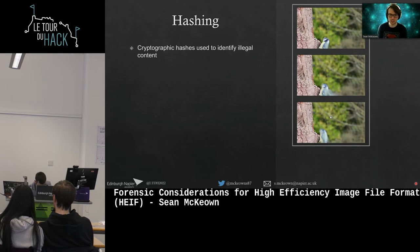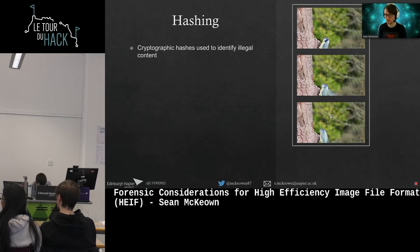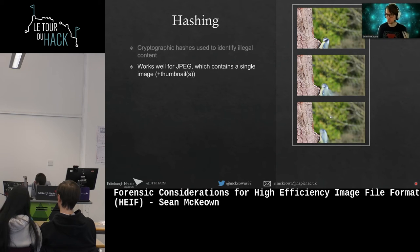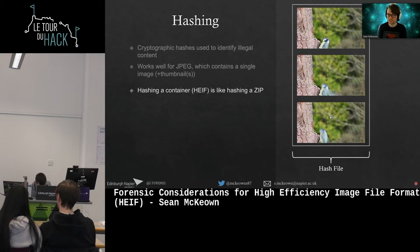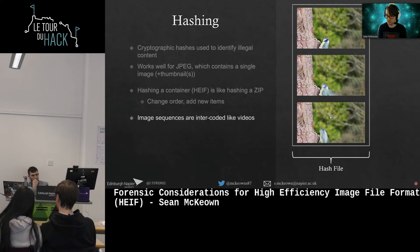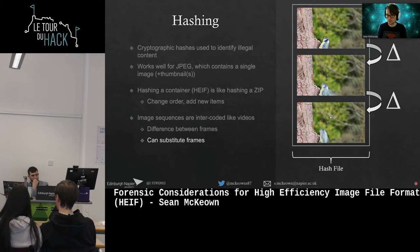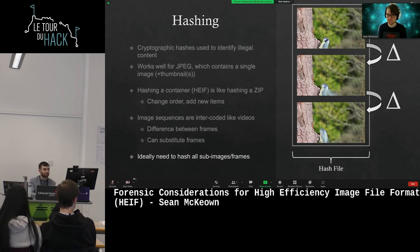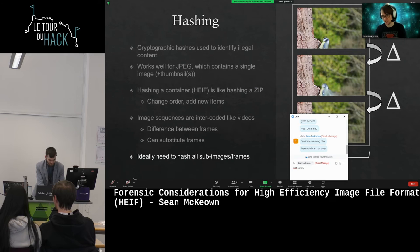Hashing is also an issue. Cryptographic hashing is meant for identifying exact content — typically used to identify illegal material. But with a container format like HEIF, hashing the whole thing is like hashing a zip file. You can move things around inside, add items, change the order — and the hash breaks. For burst shots, images are recorded as differences between frames, so adding or removing frames changes the whole binary sequence. Ideally we need to hash the individual sub-frames — export individual keyframes and hash those.